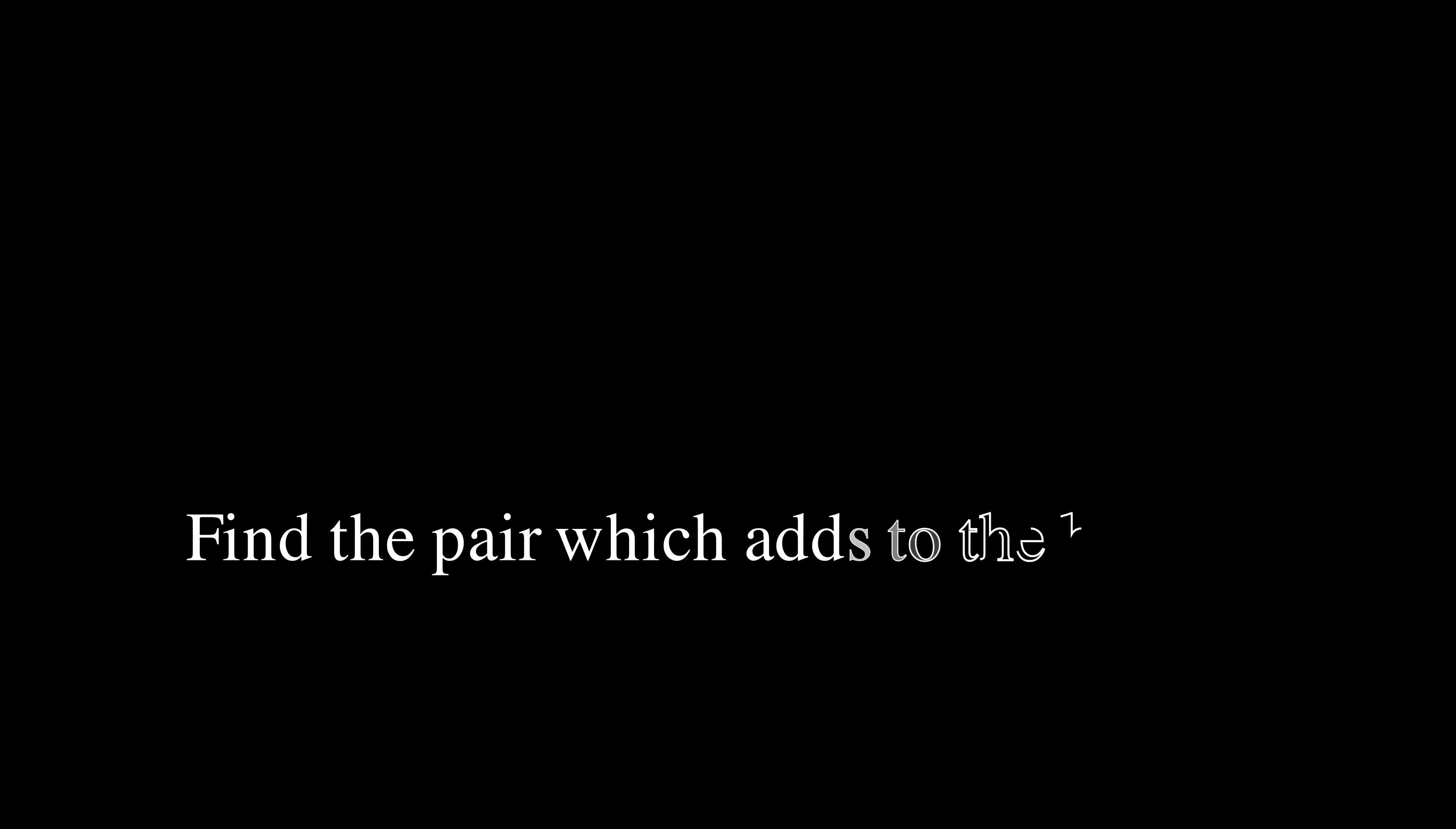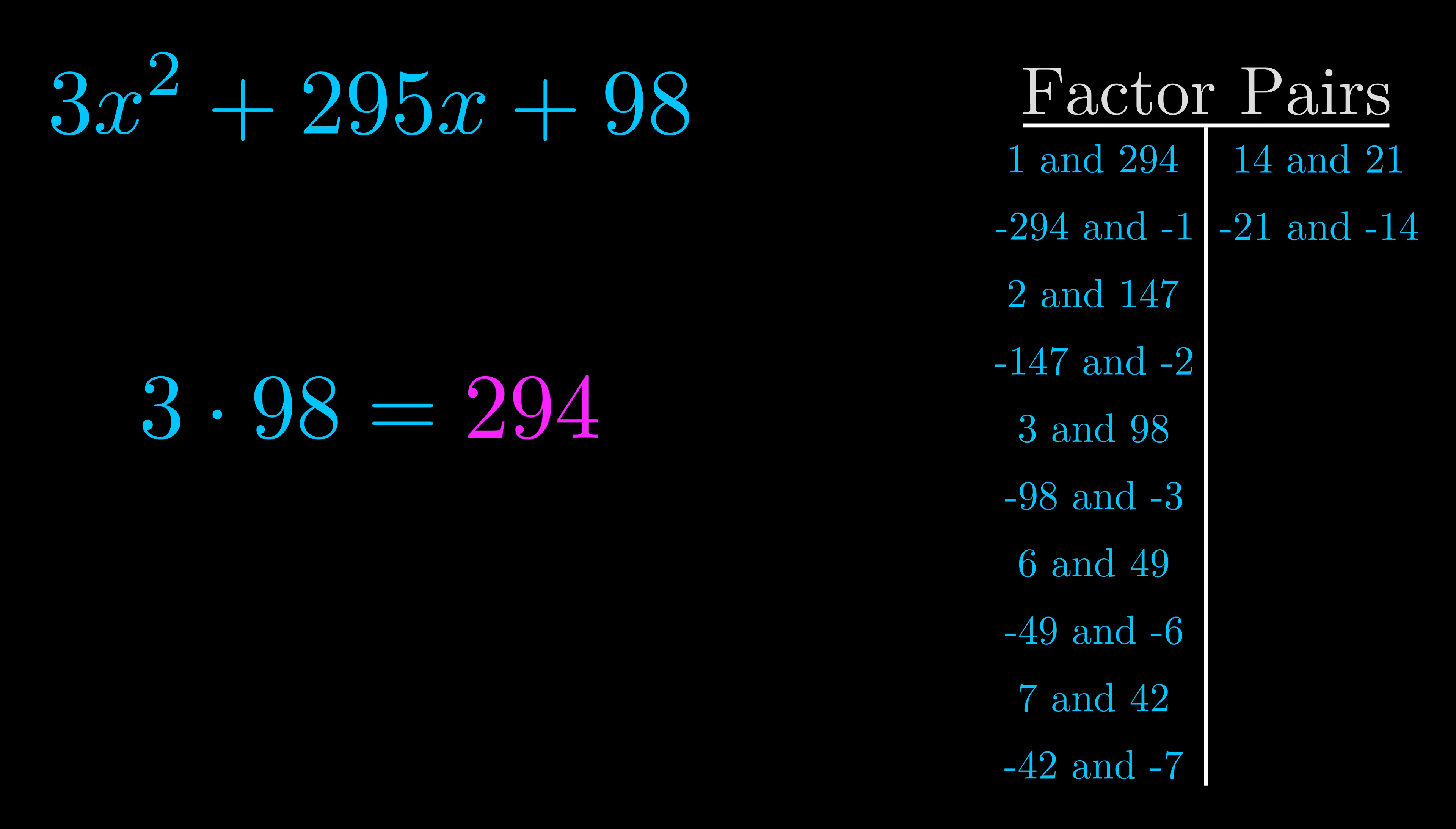The b value is the coefficient on the x term. That's the middle term, the one that we haven't done anything with yet. And really this is the only factor pair that we need.